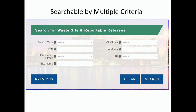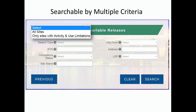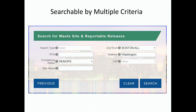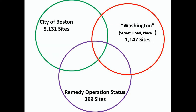Now we'll go back to the search box and do another example so you can see how to search using multiple criteria. Several of the search boxes have drop-down lists, which we've included to help make your searches easier and more standardized. For this example, I'm going to look for sites in Boston on Washington Street, and I'm going to look for sites that are in remedy operation status — these are sites that are undergoing active cleanup at the moment. Having played with this a bit before, I know there are over 5,000 disposal sites in Boston, over 1,000 sites statewide on some combination of Washington Street, Road, or Place, and almost 400 sites in remedy operation status. I also now know that there are only two sites that meet all three of these criteria, and here they are.